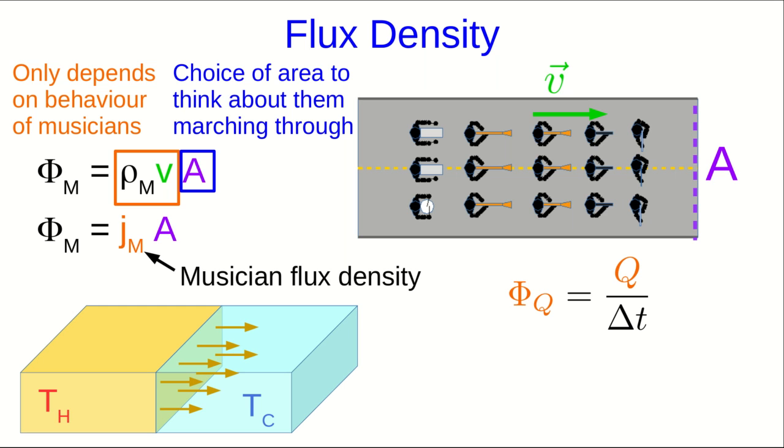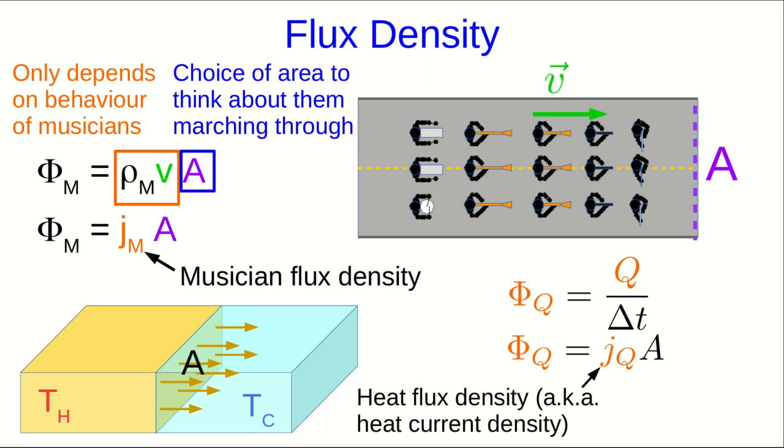We can do exactly the same thing with any flux, including heat flux. And so, if it goes through some area A, we can define a heat flux density, which is going to be in watts per meter squared.